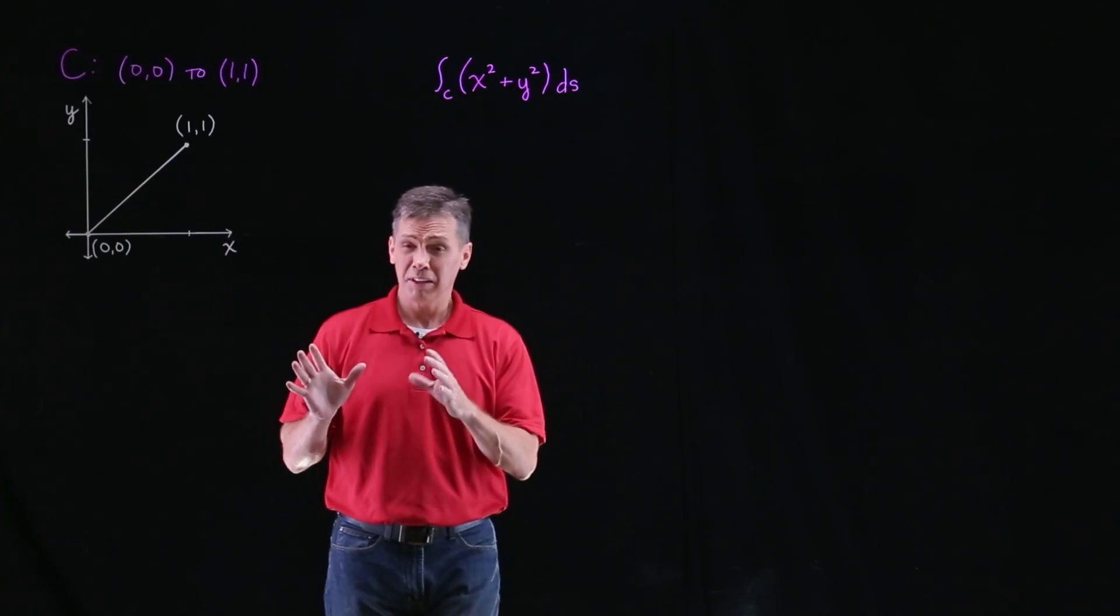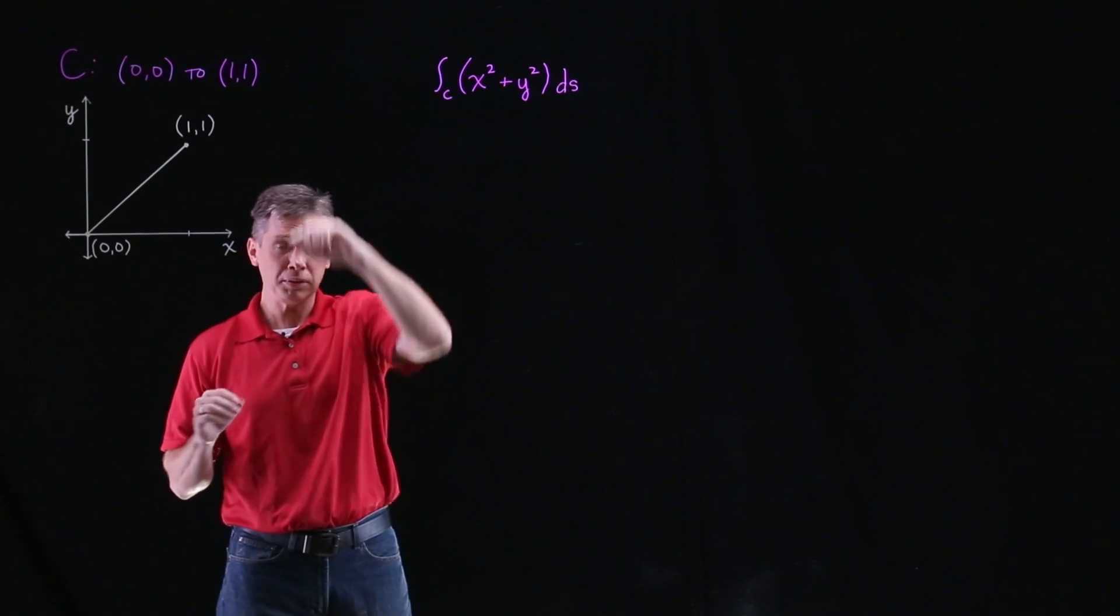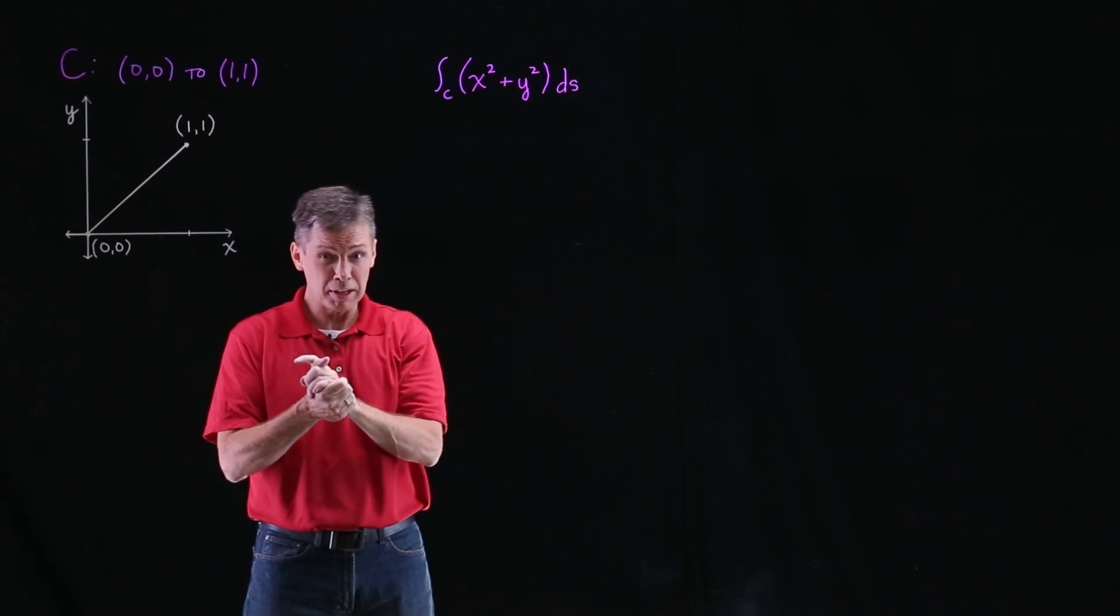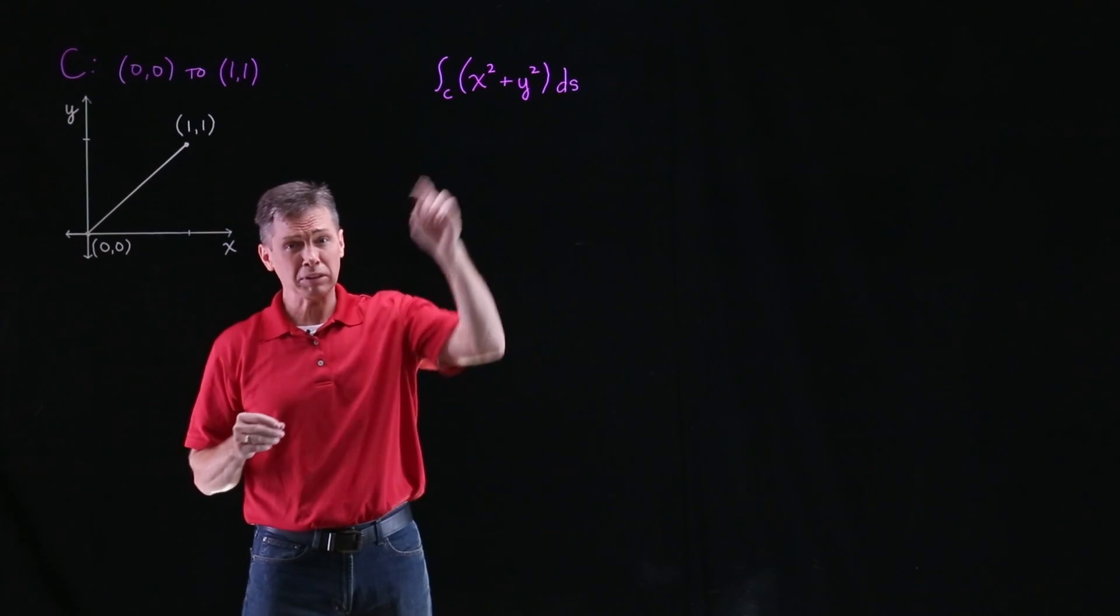Hey guys, I'm Pat Kelly. In this problem they give us a path C, in this case just from (0,0) to (1,1). They ask us to parameterize that, and as a second part of the problem we're also going to evaluate this given integral.